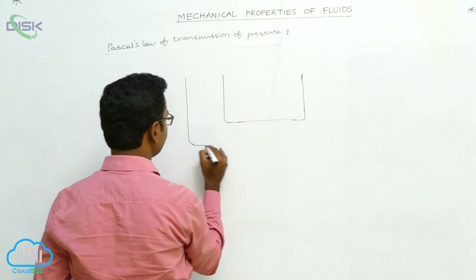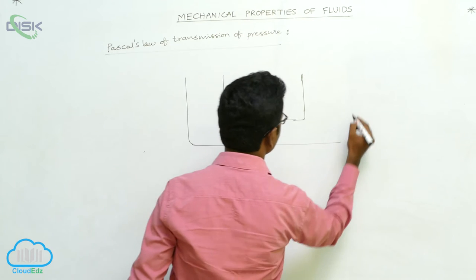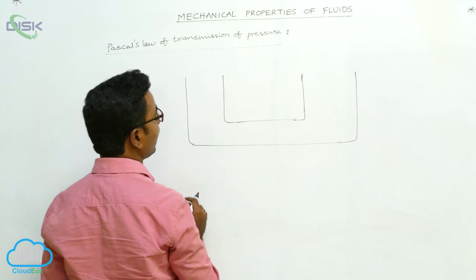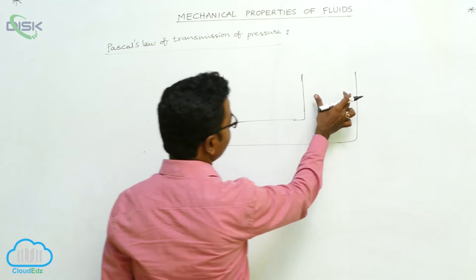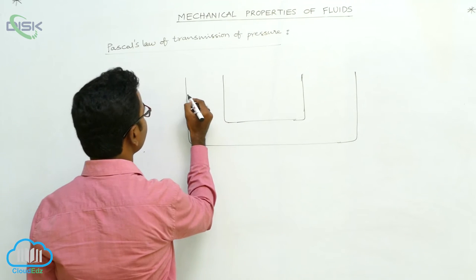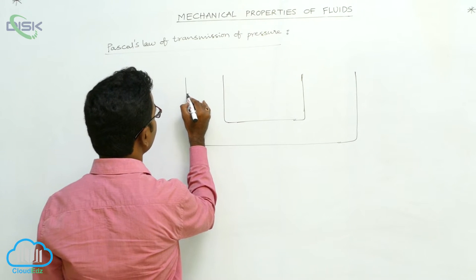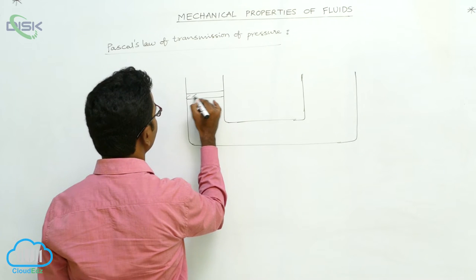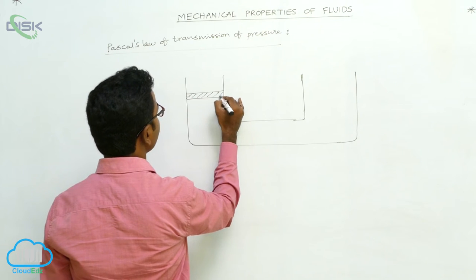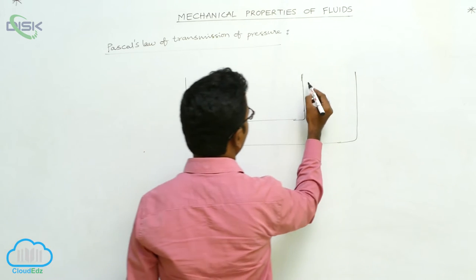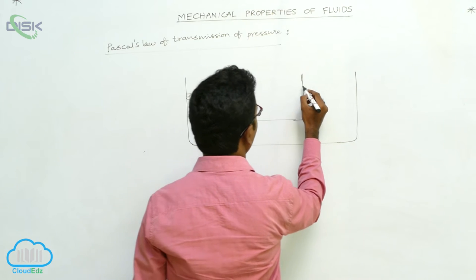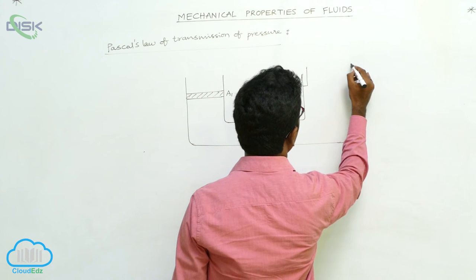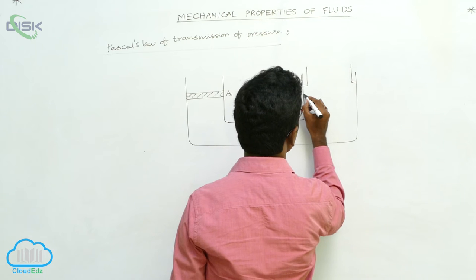Here is a container having two cylinders — one cylinder having a small area and the other having a large area. The area of the small cylinder is A1 and the area of the larger cylinder is A2. Both cylinders are fitted with pistons.